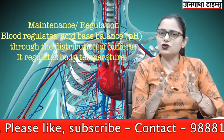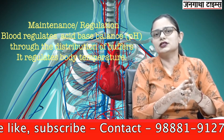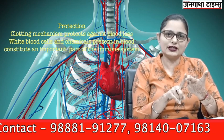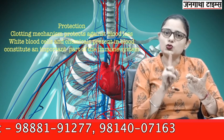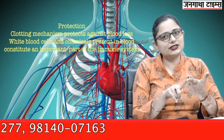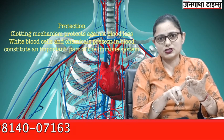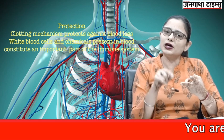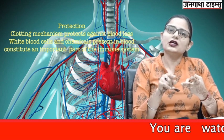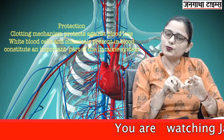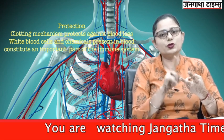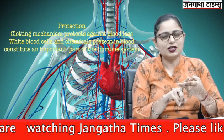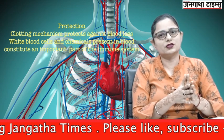The third function of blood is protection. One is by the clotting mechanism — whenever there is injury, it protects against blood loss. Second, the cells and chemicals in the blood play an important part in the immune system, providing immunity. That is all about the functions of blood.